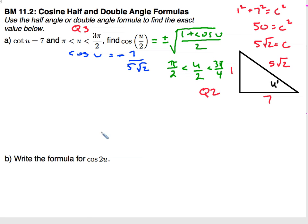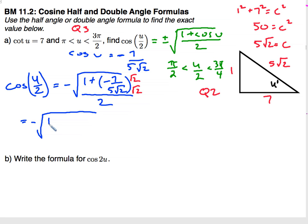And I'll just plug it into my formula now. So we have cosine of u divided by 2 to equal negative 1 plus the cosine of u, which I just did right above, negative 7, 5 square root of 2, all over 2. And I don't want that square root on the bottom, so I will rationalize that. Square root of 2, square root of 2. And that's going to give me negative square root of 1 minus 7 square root of 2, and then 5 times 2 is 10, all over 2.